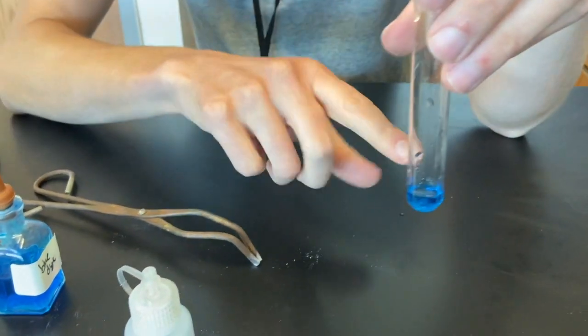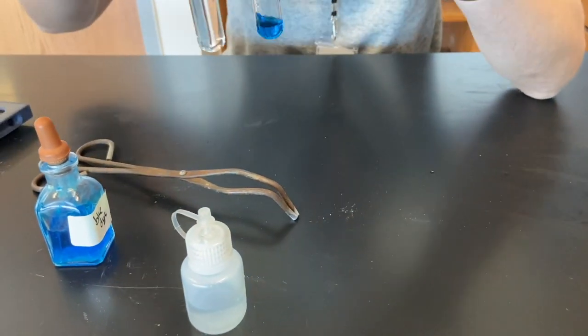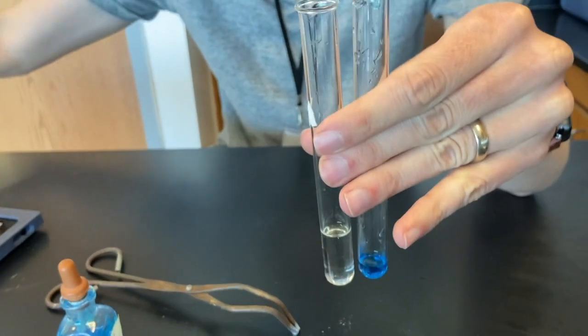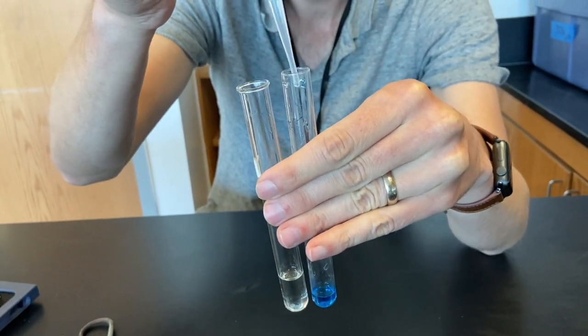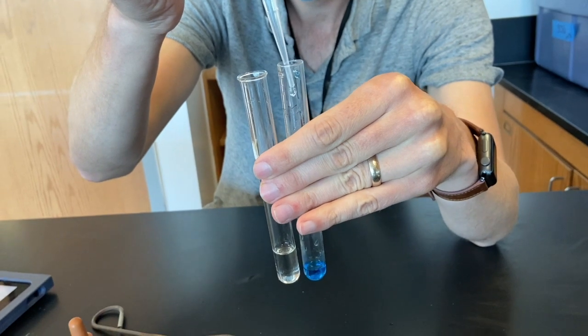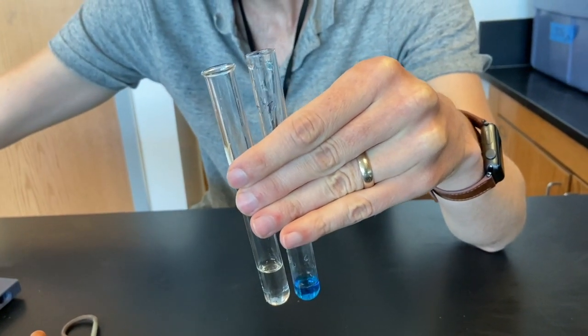Okay, so we have our 15 drops of the blue dye. We're adding five drops of the NaOCl, so here we go: one, two, three, four, five.